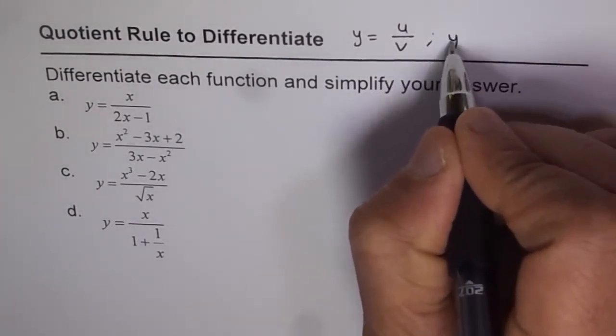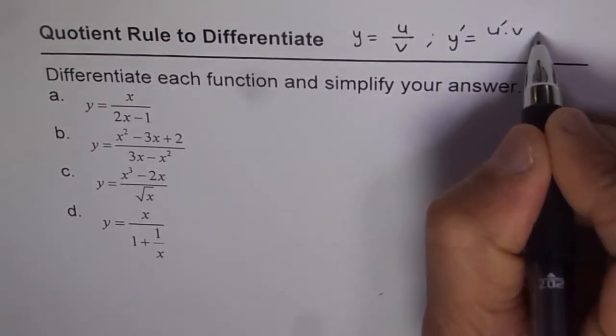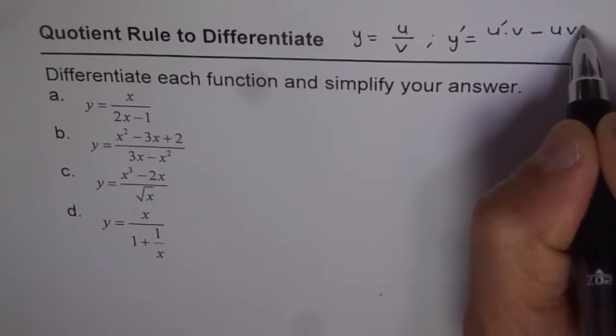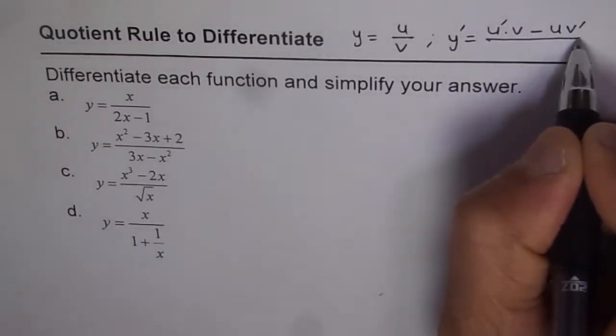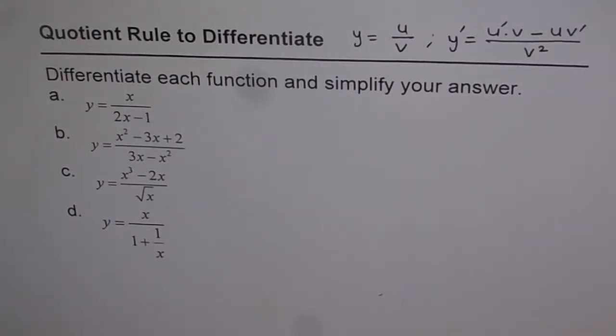In that case y dash equals to derivative of u, that is this, times v minus u times derivative of v divided by denominator square v square. So that is the formula which is to be applied.